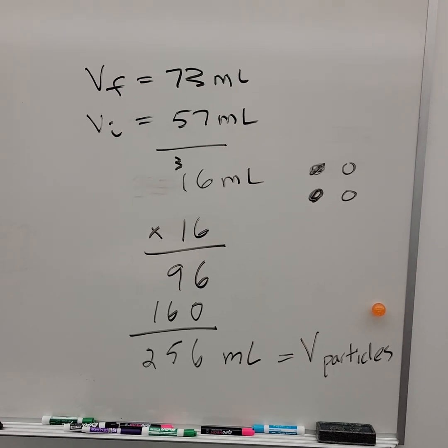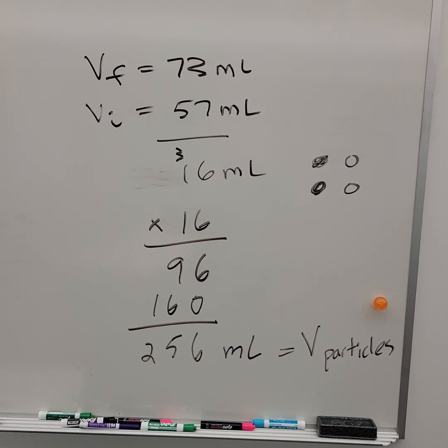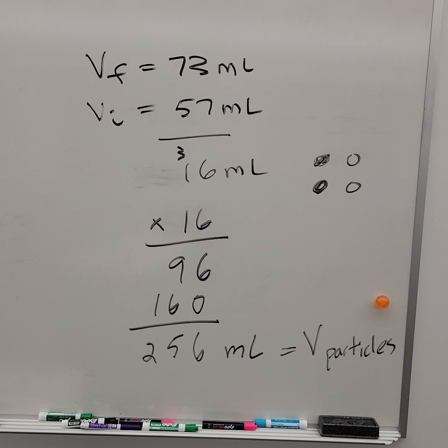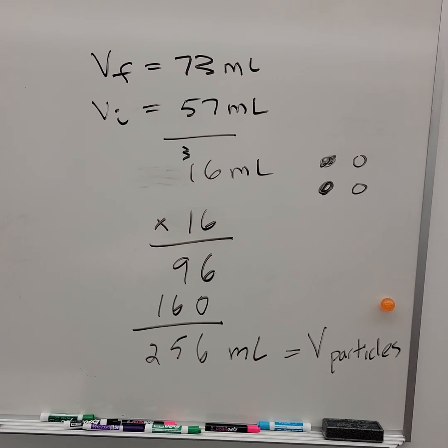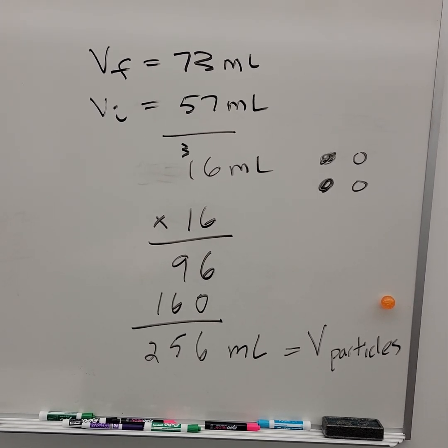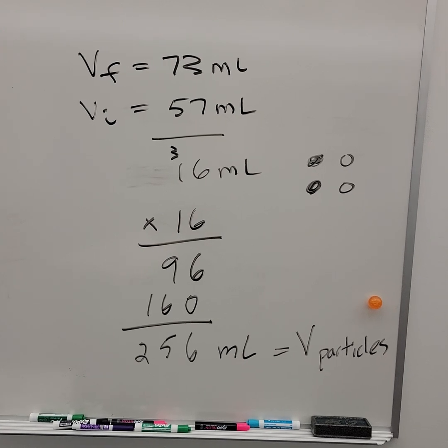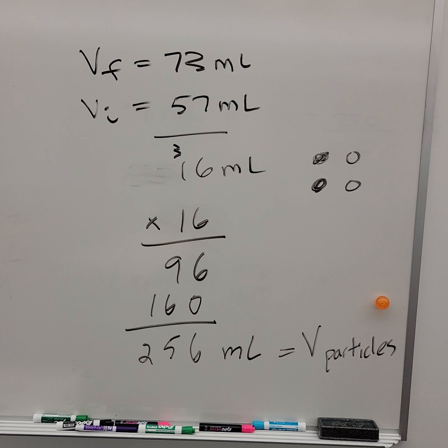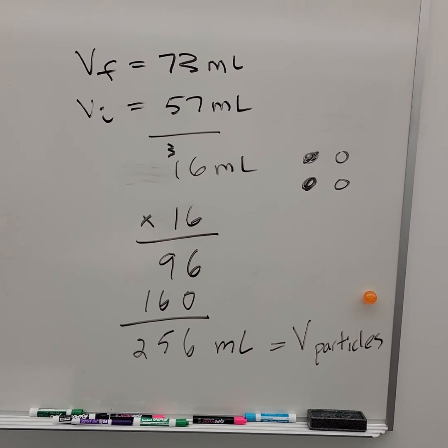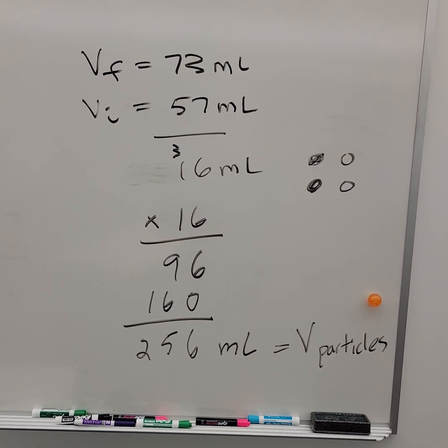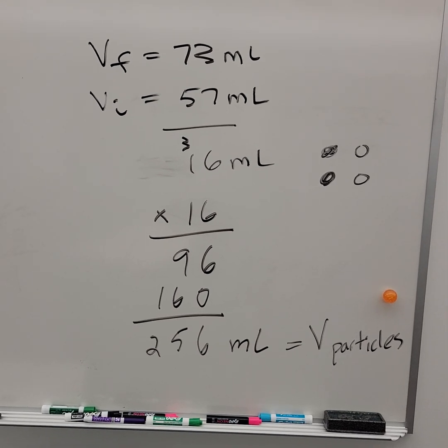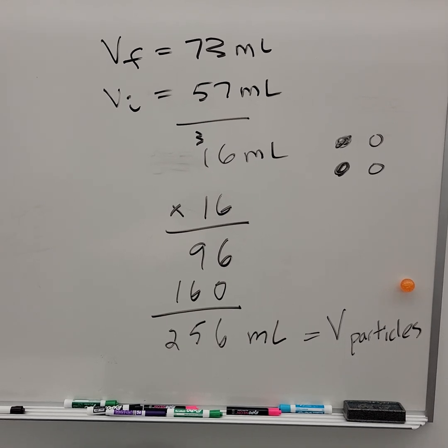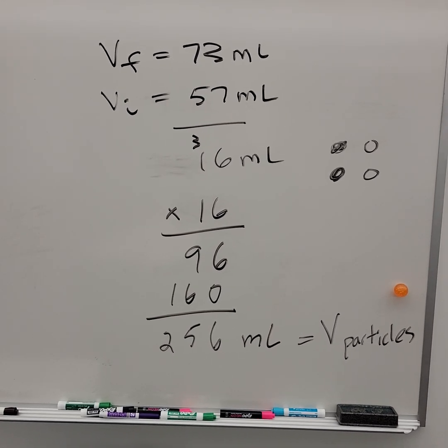I can't write and record at the same time. So up here, I've got the final volume of the water displaced is 73. Initial volume of the water level is 57. So the displacement of that water, 16 milliliters by four particles. And I multiplied by 16 because I had a total of 64 particles in my beaker. I had 32 blacks, 32 whites, 64. So the total volume of the particles is 256 mL.